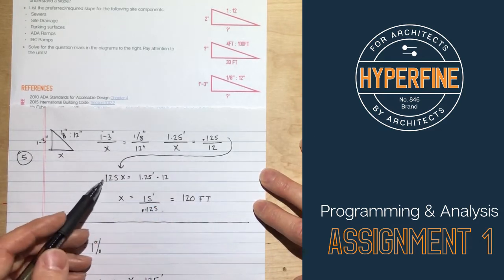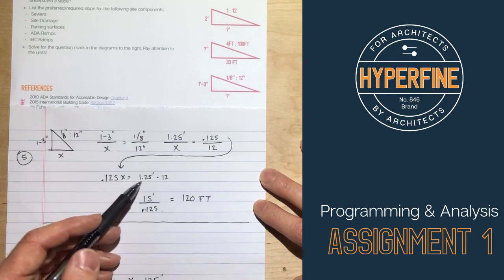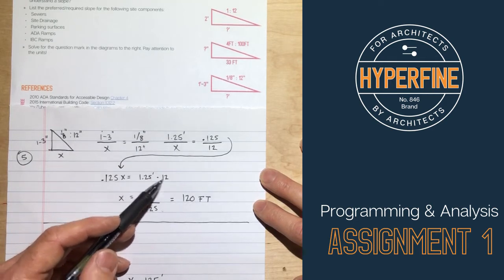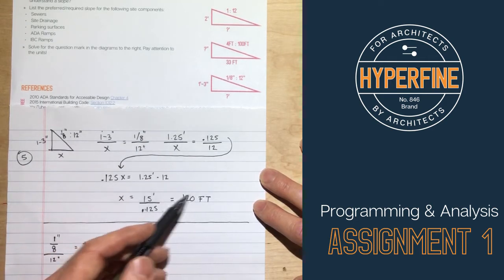So then again, we cross multiply and divide. We've got 0.125 x equals 1.25 times 12. That works out to 120 feet.